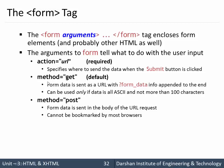When using the GET method, data is passed through a query string — the URL is appended with a question mark followed by the form data. GET can only transmit ASCII data and not more than 1024 characters. With the POST method, form data is sent in the body of the request and cannot be bookmarked, whereas the GET method can be bookmarked.